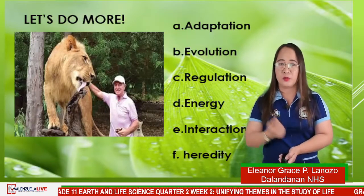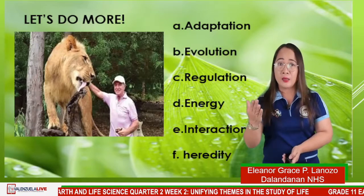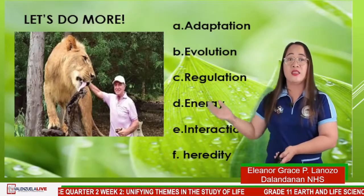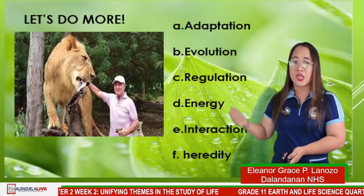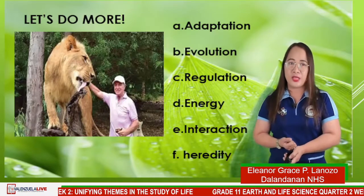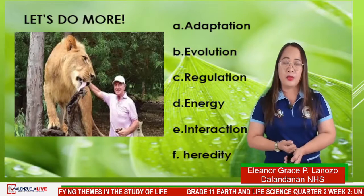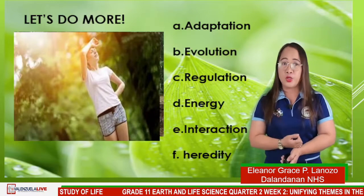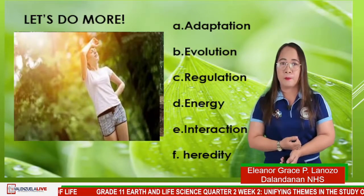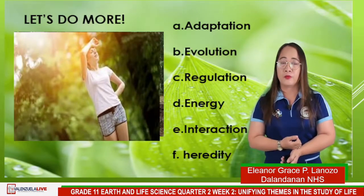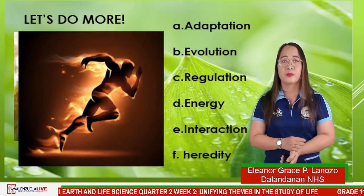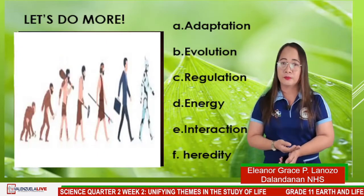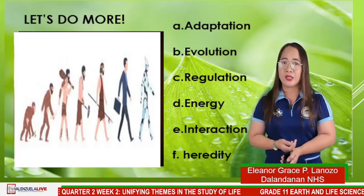You can choose from: A — adaptation, B — evolution, C — regulation, D — energy, E — interaction, F — heredity. Now write down your answer for picture number 2, picture number 3, picture number 4, and lastly picture number 5.